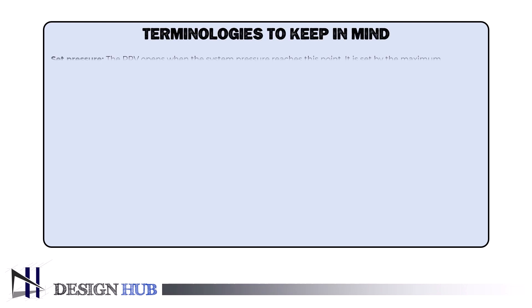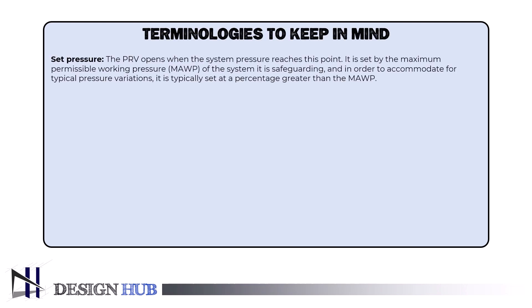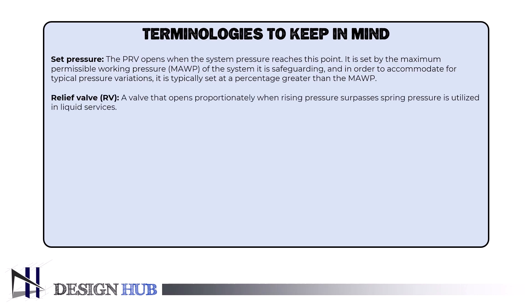Also, there are some terminologies to keep in mind when going through safety valves. The first is set pressure: the PRV opens when the system pressure reaches this point, set by the maximum permissible working pressure, MAWP, of the system it is safeguarding, and typically set at a percentage greater than the MAWP to accommodate typical pressure variations. The American Society of Mechanical Engineers, ASME, may have established recommendations for accuracy. The second is the relief valve, RV: a valve that opens proportionately when rising pressure surpasses spring pressure, utilized in liquid services.